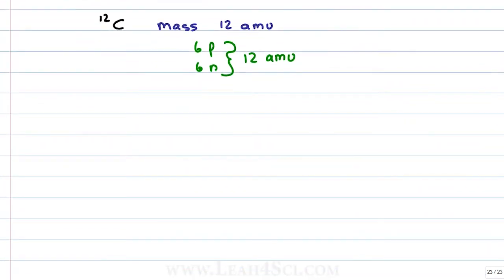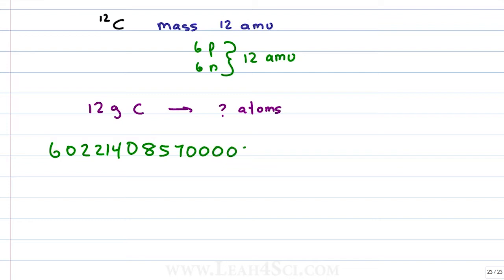If I want to use 12 AMU on a small scale and 12 grams on the large scale, and I weigh out 12 grams of carbon — which is mostly carbon-12 — how many atoms do I have? If I weigh out 12 grams of carbon-12, we'll end up with a ridiculous amount of carbon atoms: specifically, 6,022,140,857,000,000,000,000,000. Can you imagine if the MCAT dealt with molecules in this format? The math would be insane!